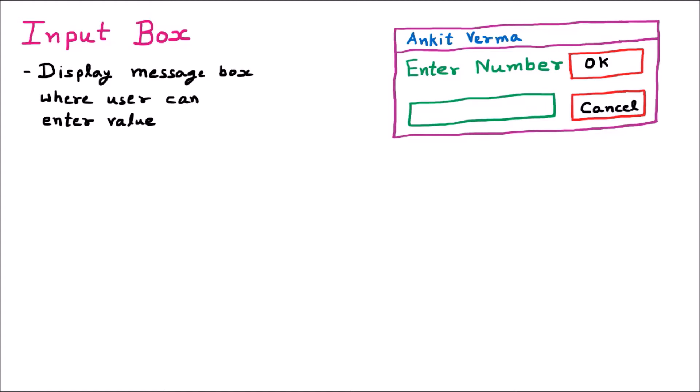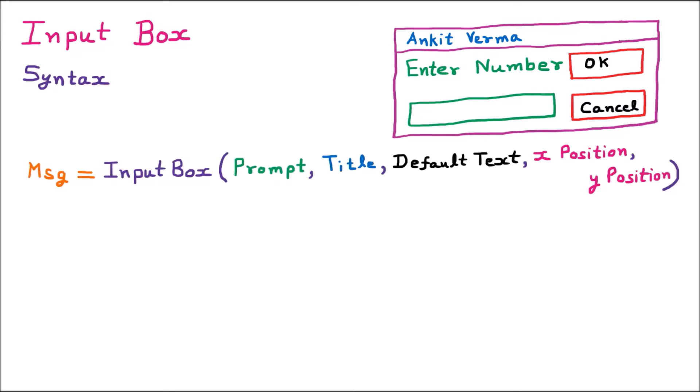The return type of the InputBox function is string type. Now we are learning the syntax of the InputBox function so that we can use it while programming. We are going through the various parameters inside the InputBox function one by one, along with its return type.